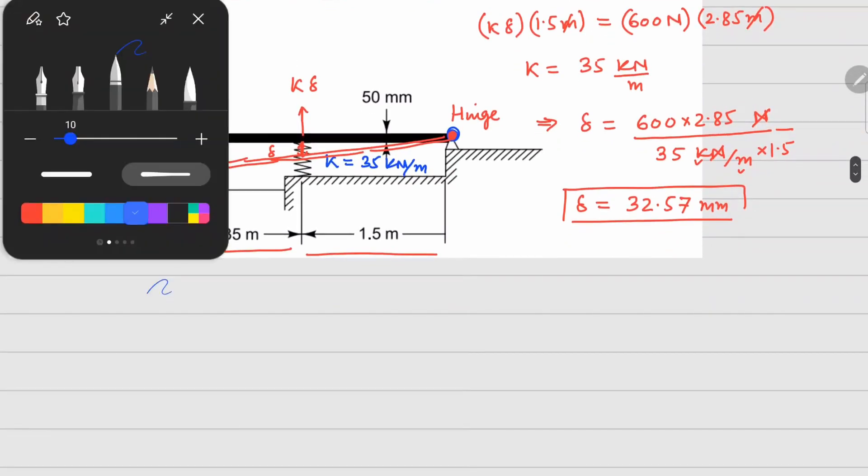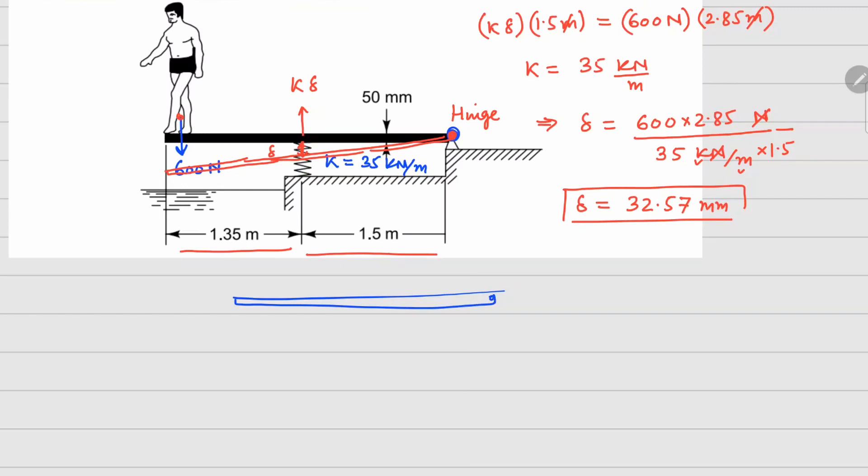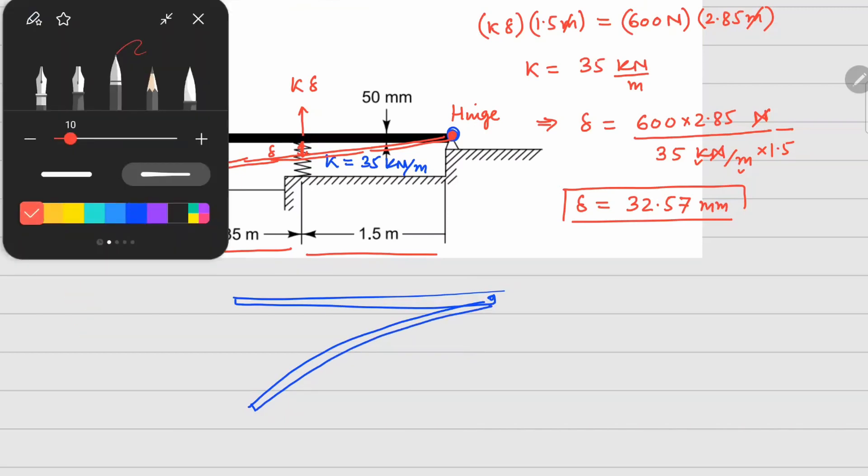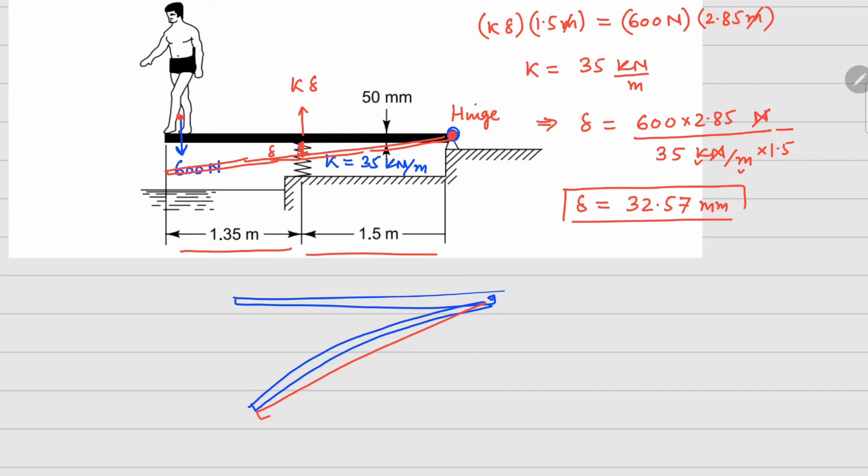One when your board is flexible and the second one is when it is rigid. When it is flexible we are going to have a deflection that's going to look somewhat like this, and when we make it rigid it's going to become a flat line, so it's going to be in this manner. Somewhere here we have our spring, so you can compare that in the case of a flexible board your deformation is less and for the rigid case it is going to be more.